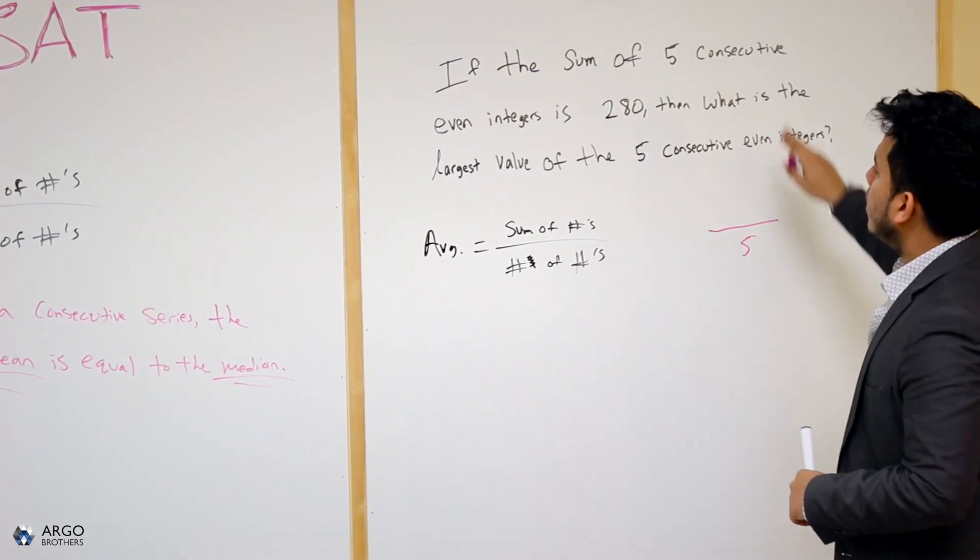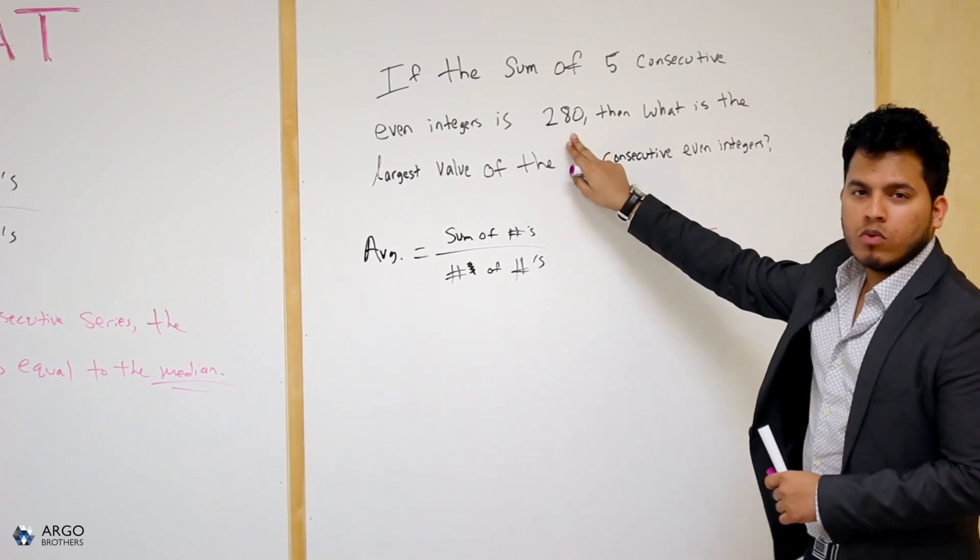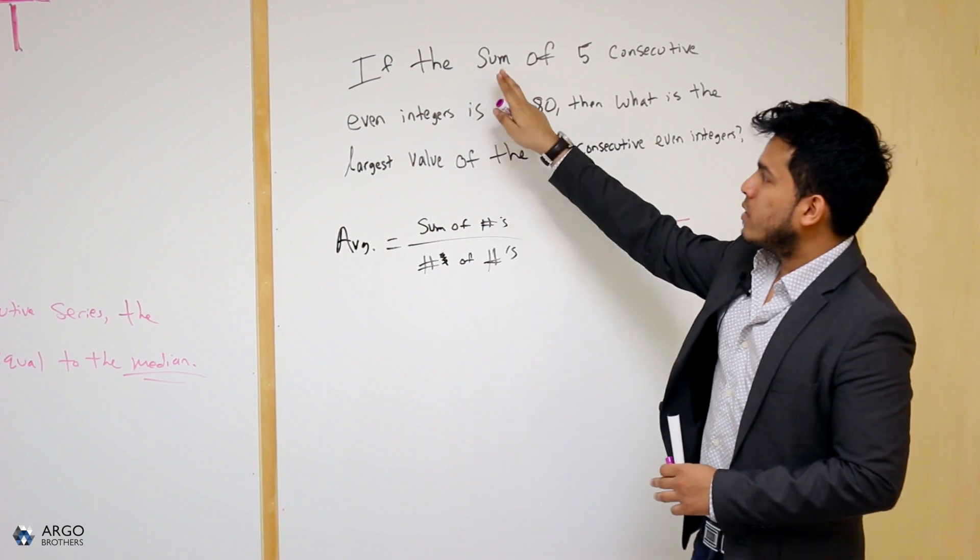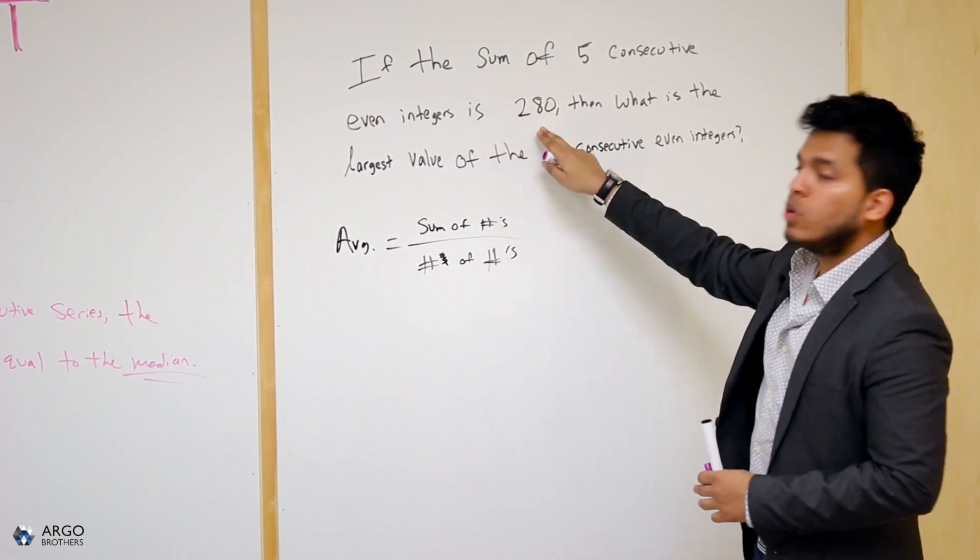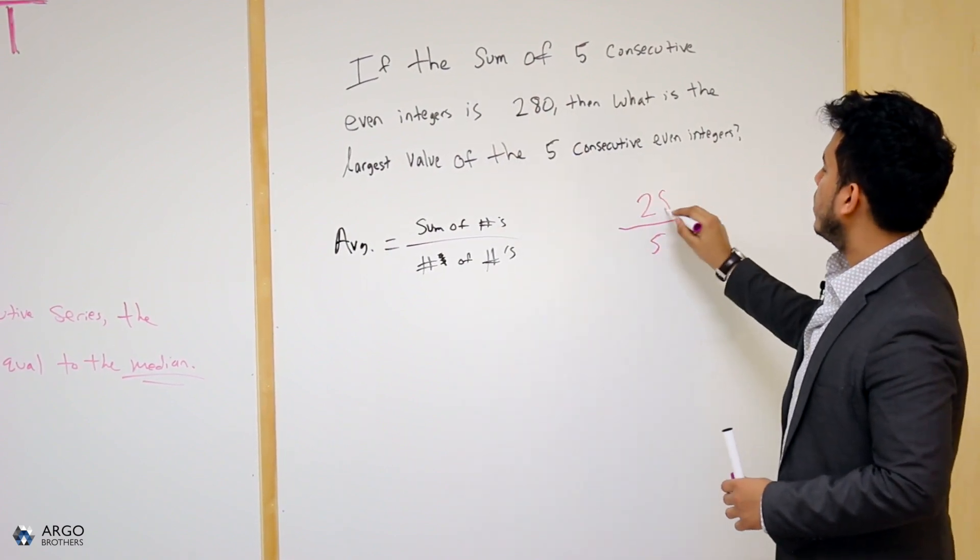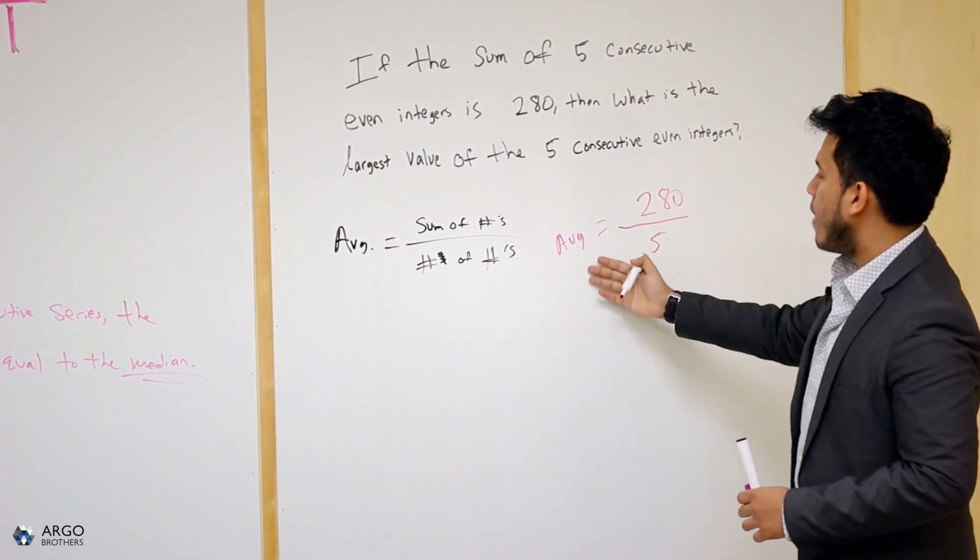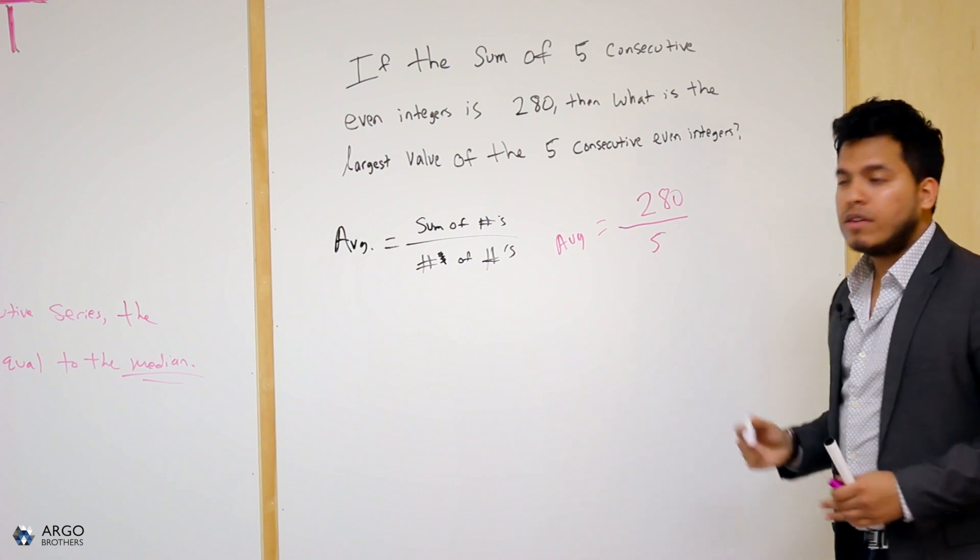Let's go ahead and plug it in. So here is five is 280. What's 280? The average or the sum? Well, it's very clear. If the sum is 280, so here's my sum, 280, and very simple, the average, 280 divided by five is 56.